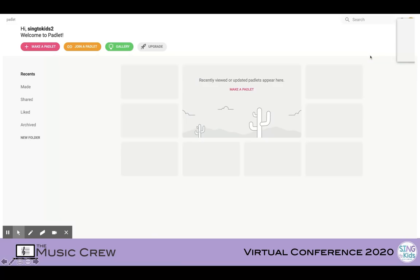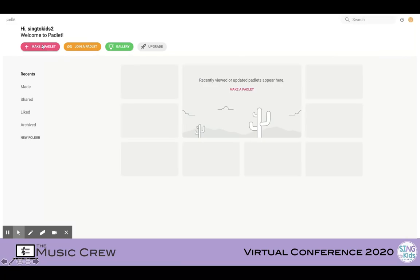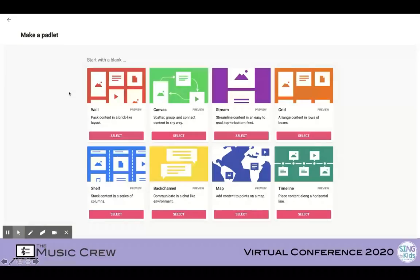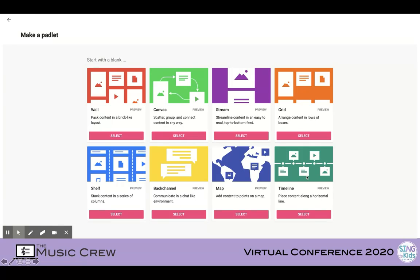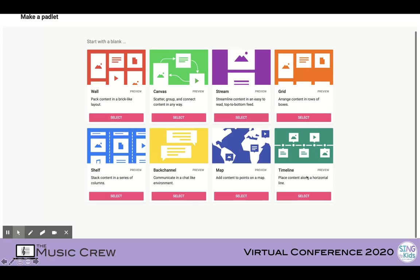Basic accounts are free and give you three Padlets to start from. Now we're going to click Make a Padlet. You'll see that there are eight templates: Wall, Canvas, Stream, Grid, Shelf, Back Channel, Map, and Timeline. We're going to use the shelf template today.